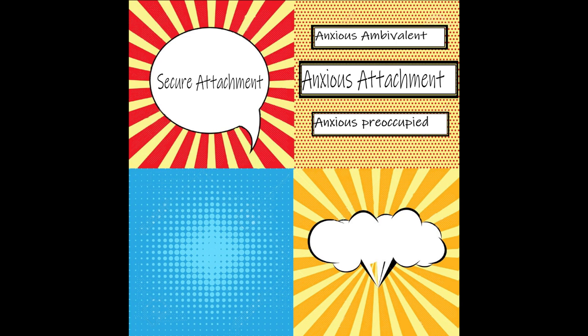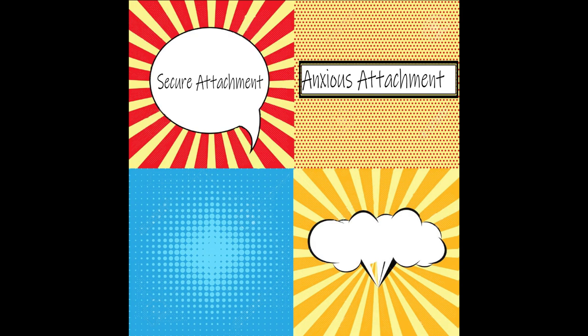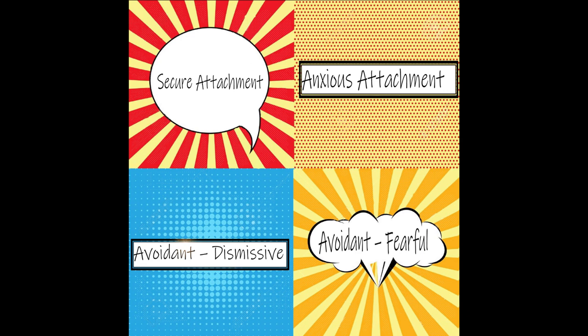So essentially we still have three categories described in different ways. However, the last two are a little more complex. Researchers Bartholomew and Horowitz argued there is one more attachment style. They suggested the avoidant category breaks into two: fearful and dismissive, giving us four attachment styles in total. Avoidant dismissives think little of other people's ability to be there for them, see others negatively, and deny their need for people. However, they don't see themselves negatively — they hold a positive view of the self and a negative view of others. Avoidant fearful people, by contrast, see themselves as having little worth or being undeserving of love, and also believe others won't be there for them.